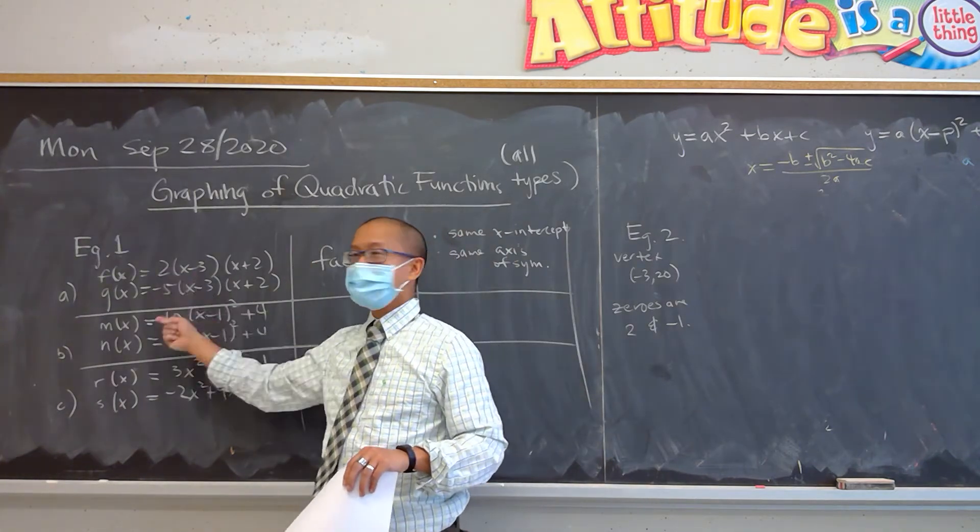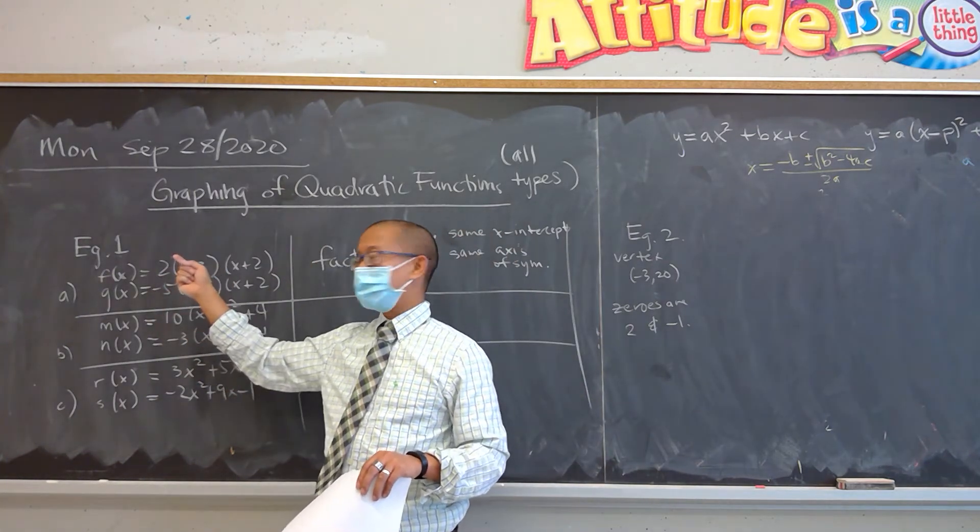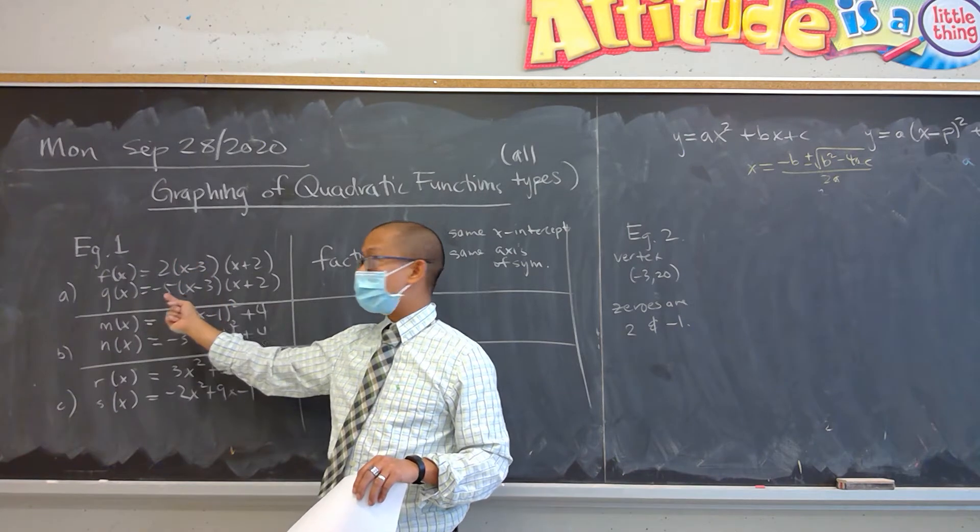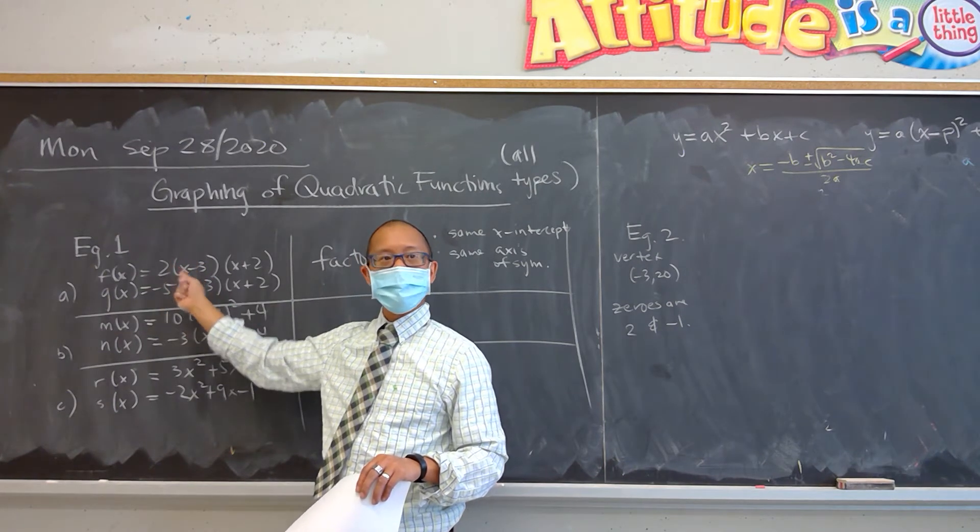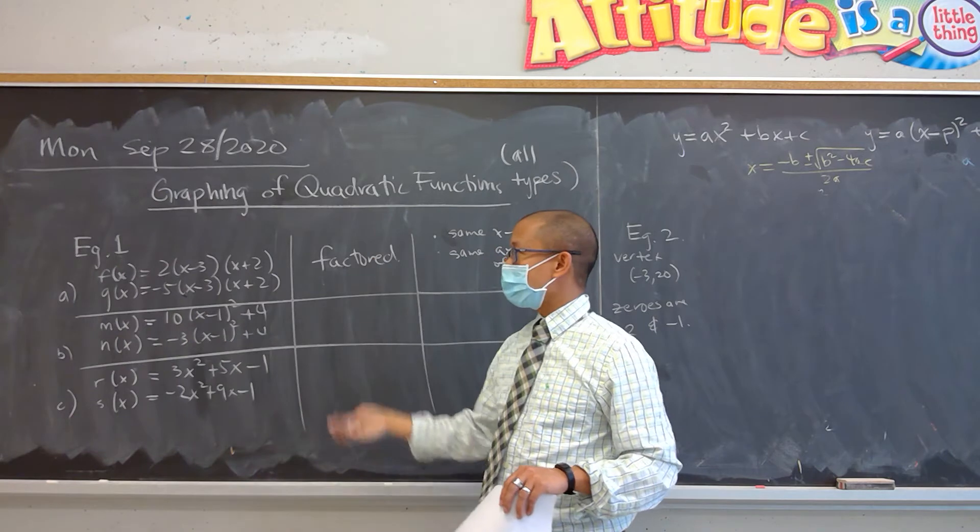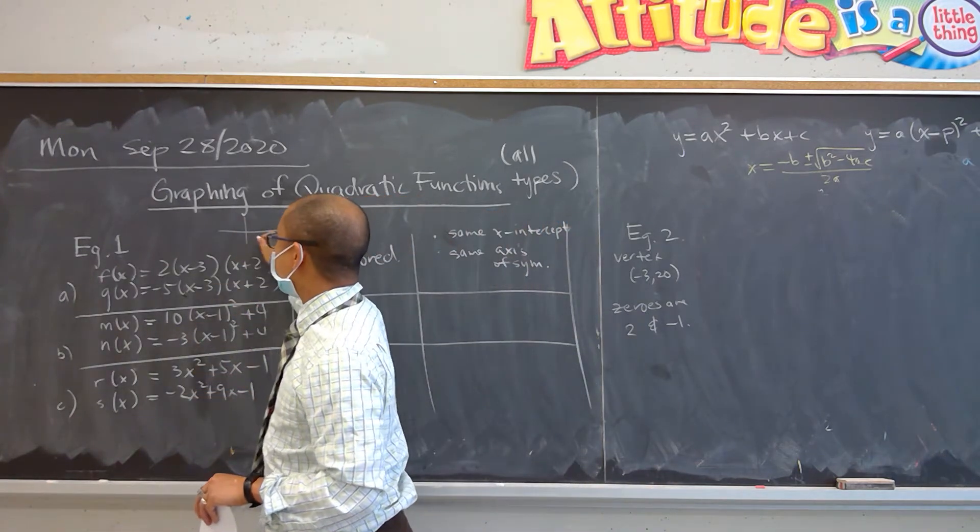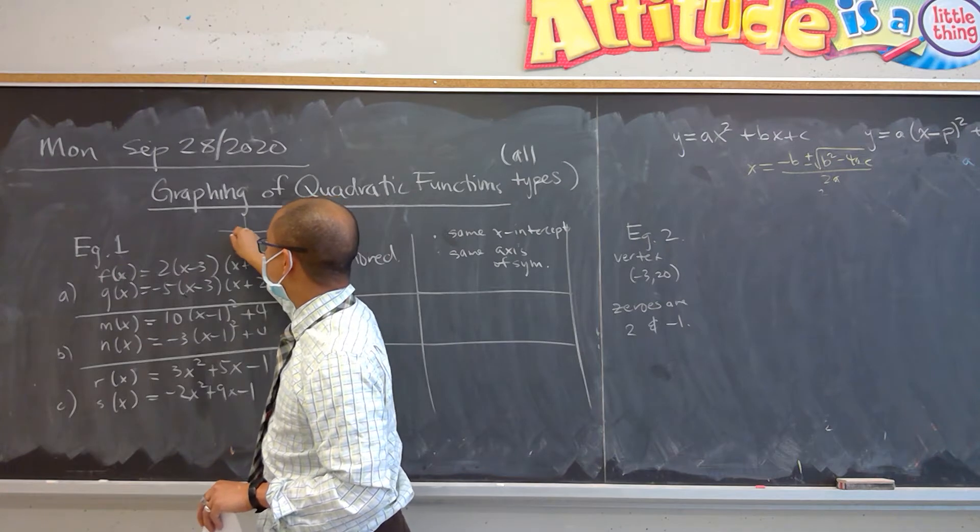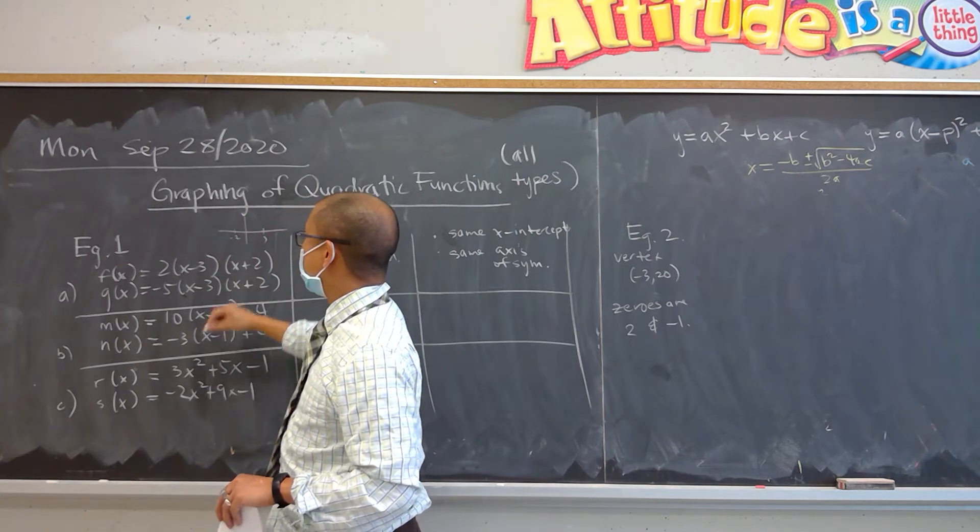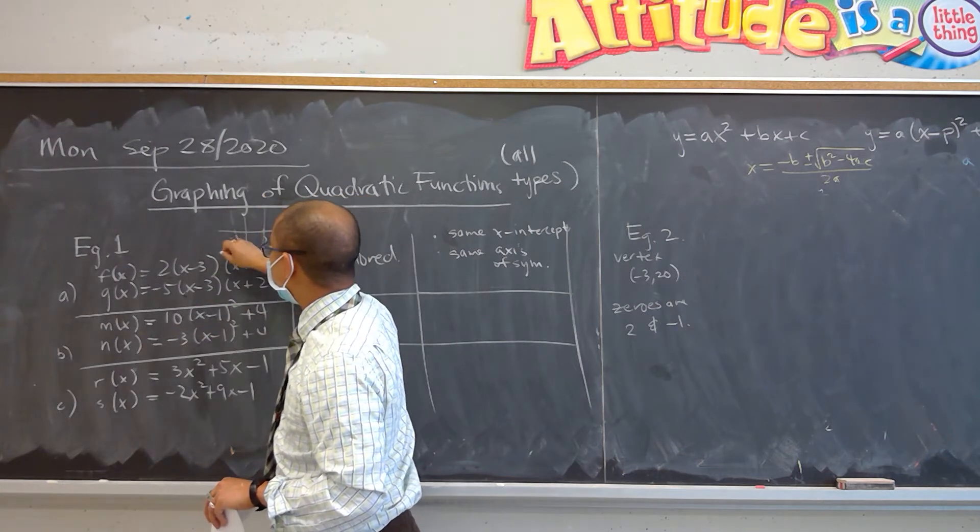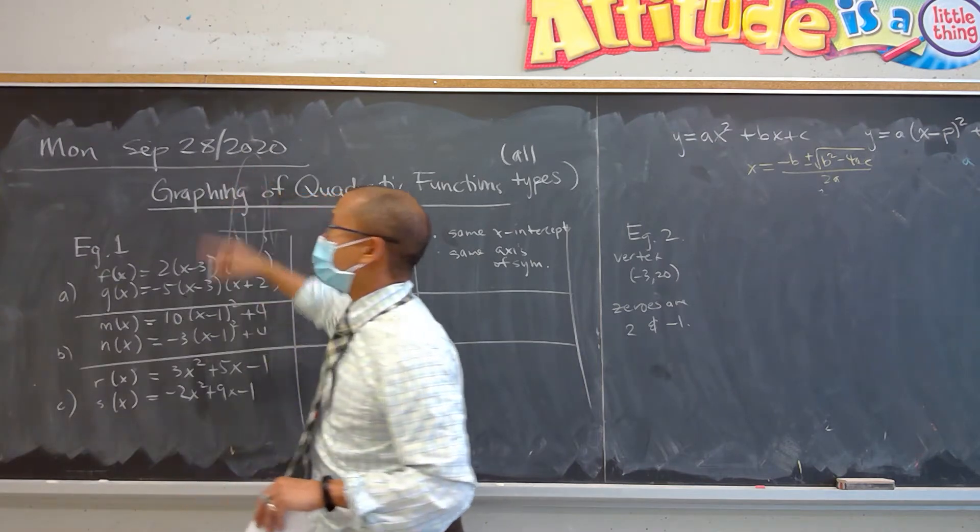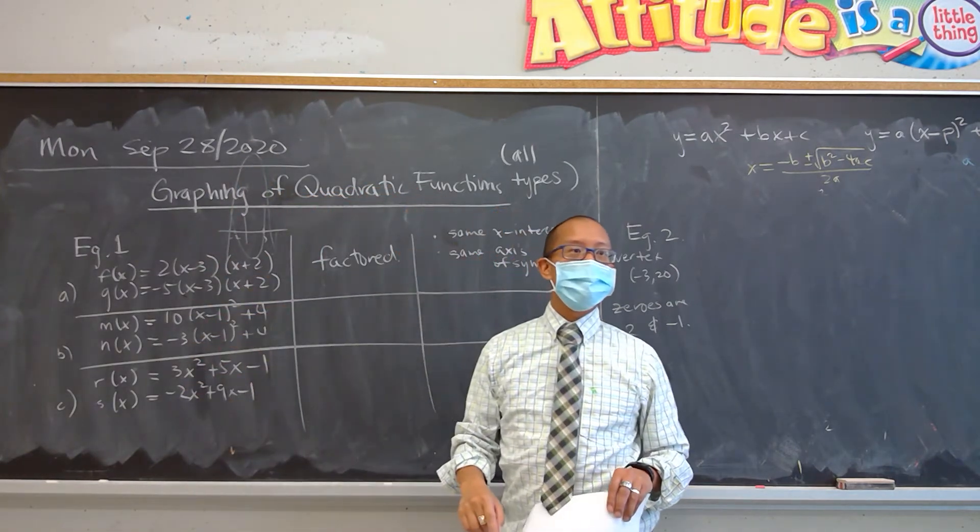Notice they're both these narrow parabolas, but one is definitely opening down. One can be more skinny than the other one, but they have the same x-intercepts. If some of you want to go to Desmos online, some of you might want to sketch it out at negative 2 and at 3. One of them really, really narrow.